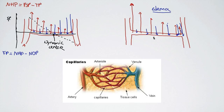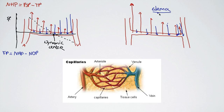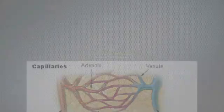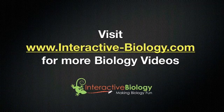The take-home message: net hydrostatic pressure equals blood pressure minus tissue pressure. Filtration pressure equals net hydrostatic pressure minus net osmotic pressure. On the arteriole side of the dynamic center, filtration pressure moves fluids and dissolved molecules out of the capillaries; on the venule side, it moves fluids in. High blood pressure can shift the dynamic center significantly, resulting in accumulation of fluid in the tissues, or edema. Visit interactive-biology.com for more biology videos and resources.